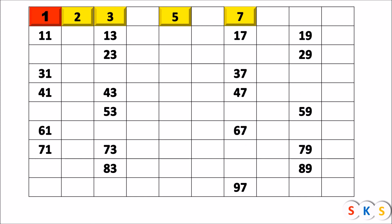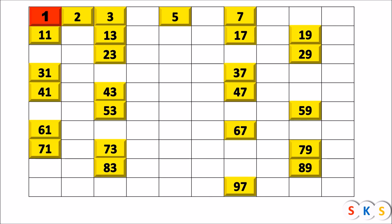Now the remaining numbers in this table are all prime numbers. These are the prime numbers from 1 to 100: 2, 3, 5, 7, 11, 13, 17, 19, 23, 29, 31, 37, 41, 43, 47, 53, 59, 61, 67, 71, 73, 79, 83, 89, 97.